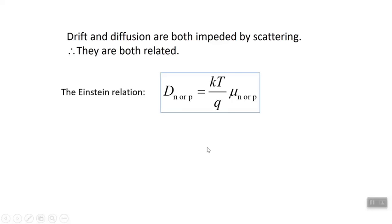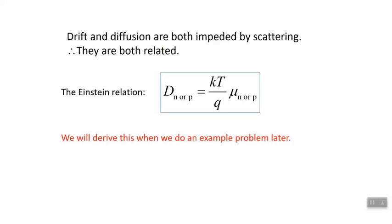This is called the Einstein relation: the hole diffusion coefficient D_p equals (kT/q) times mu_p, the hole mobility, and the same expression holds for electrons with D_n and mu_n. This is an expression you'll find very useful in many problems — that's why there's a box around it. It's so important we will actually derive it shortly. Next we'll talk about non-equilibrium, where we actually have current flowing through the device, and then we'll do the problem where we derive the Einstein relation.